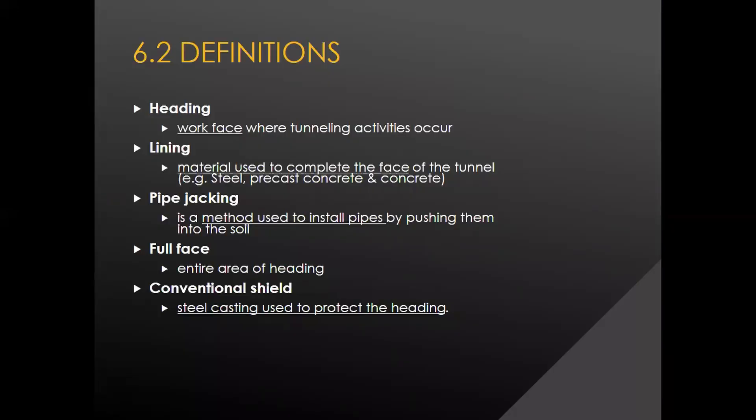Definitions you need to know for this chapter: heading is the work face where tunnel activities are occurring. Lining is the material used to complete the face — steel, concrete, or whatever is used. Pipe jacking is a method used to install pipes into the soil. Full face refers to the entire area of the heading. And the conventional shield is a steel casting used to protect the heading.